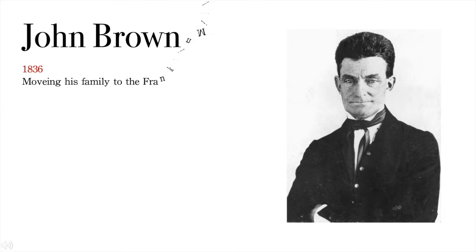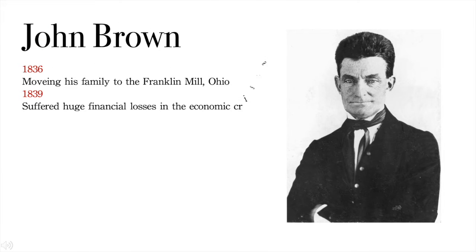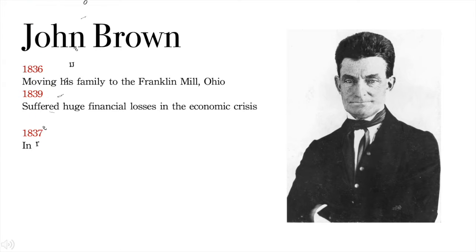In 1836, Brown moved his family to Franklin Mills, Ohio, where he borrowed money in the area to build and operate a tannery. He suffered huge financial loss in the economic crisis of 1839. After heavy borrowing, many businessmen like Brown trusted too much in credit and public debt and paid for it very heavily. In one episode, Brown was detained when he attempted to retain ownership of a farm by occupying it against claims by the new owner.